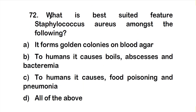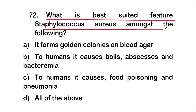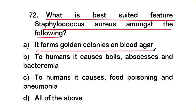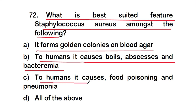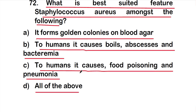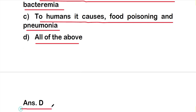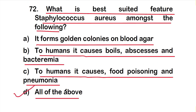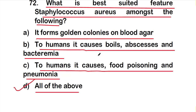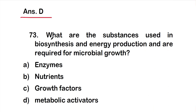Question number 72: What is the best-suited feature of Staphylococcus aureus? Options are: A) it forms golden colonies on blood agar, B) it causes boils, abscess, and bacteremia in humans, C) it causes food poisoning and pneumonia, D) all of the above. The right answer is option D — all of the above are true features of Staphylococcus aureus.